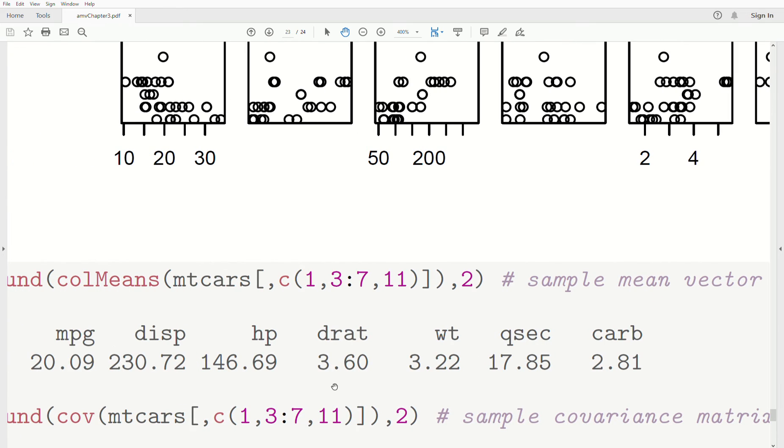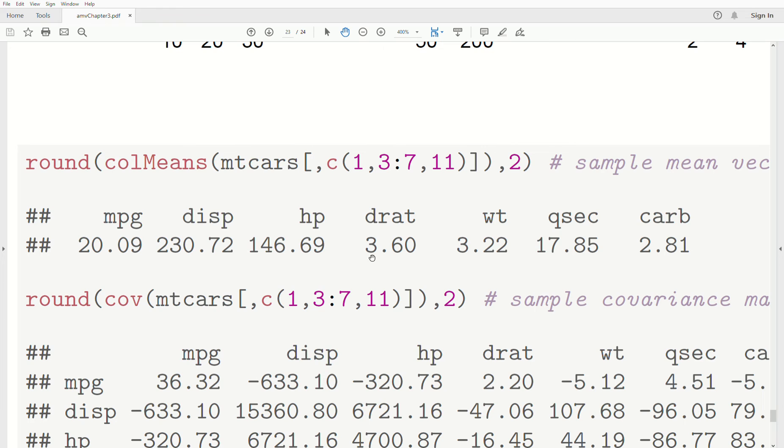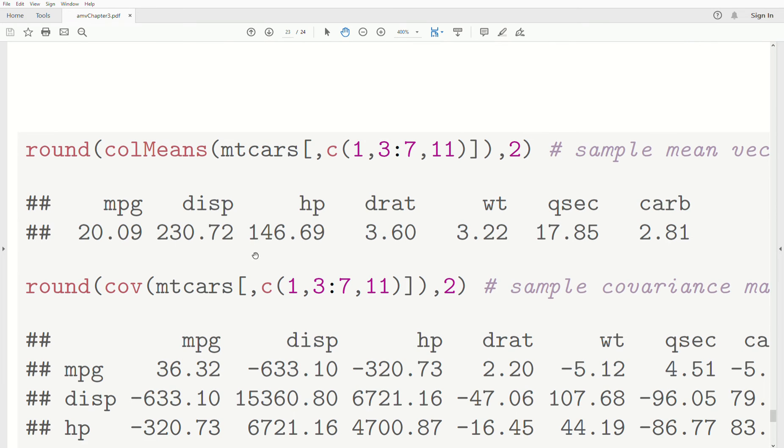So now to calculate the mean vector, I'm only going to grab the columns which are continuous-like. You say column means, and it creates the means for each of these columns. I round it to two decimals, so it fits nicely on the screen. And so there's the sample mean vector.